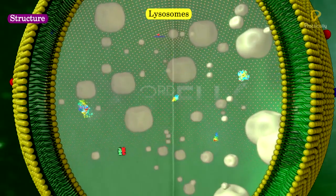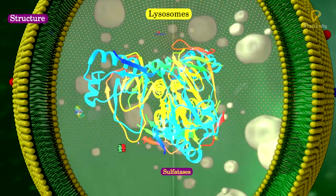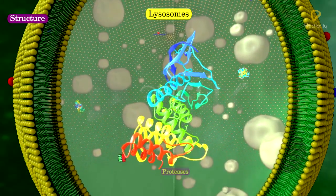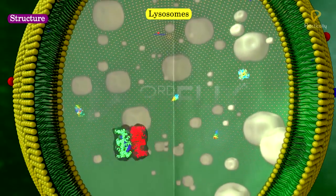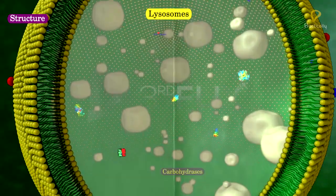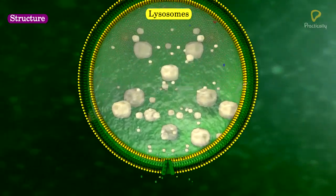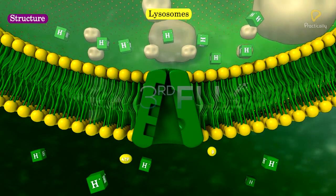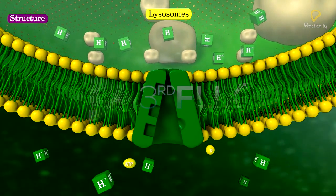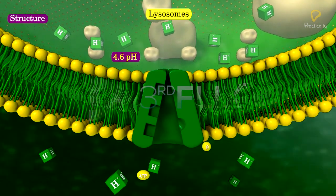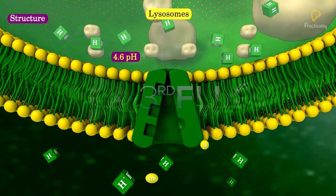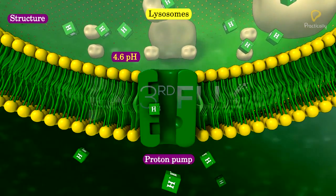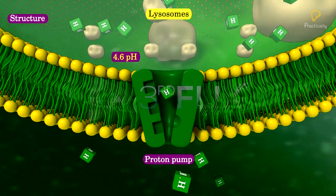phosphatases, sulfatases, nucleases, proteases, and carbohydrates. Most of the hydrolytic enzymes of lysosomes function at acidic pH, approximately 4.6. This pH is maintained by a proton pump that accumulates H+ inside the lysosome.